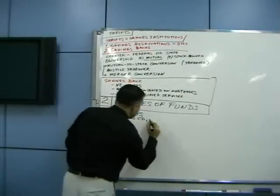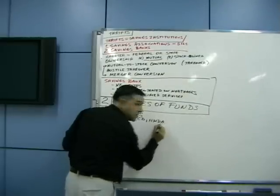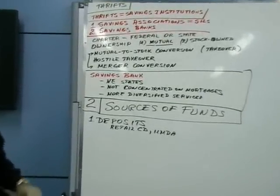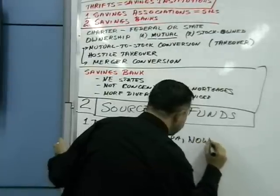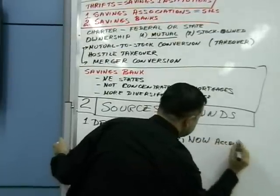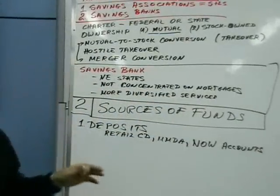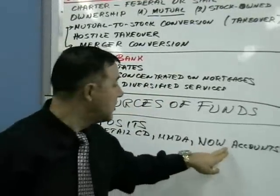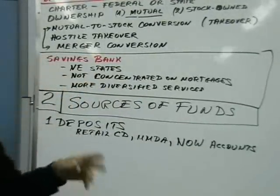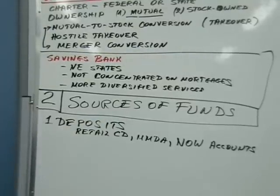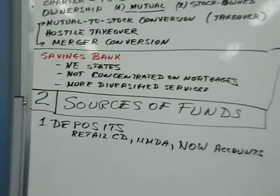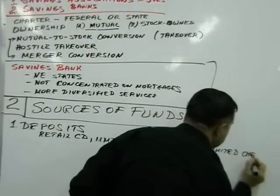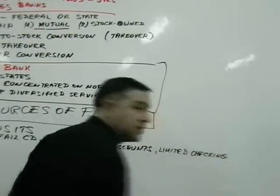They also have money market deposit accounts. Later, they added NOW accounts — negotiable order of withdrawal accounts — a new type that is not very popular. And at one point they provided limited checking accounts. Those are some of the deposit-type sources of funds.